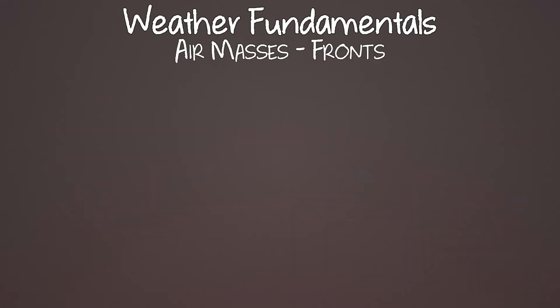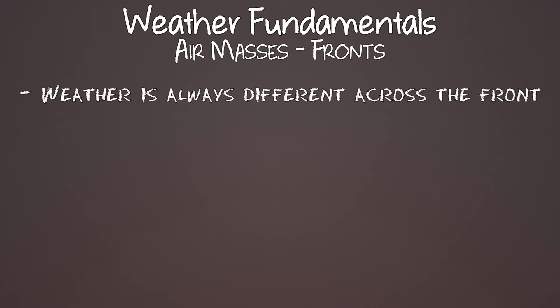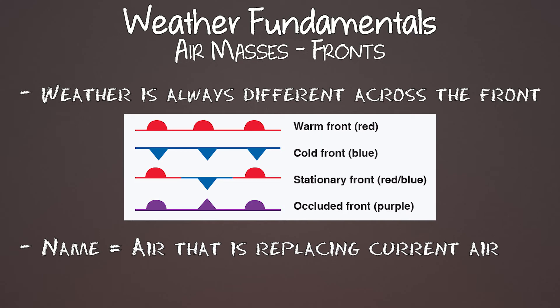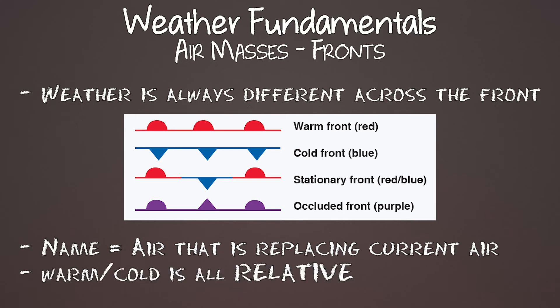When air masses run into other air masses that are different, they form a front — a boundary layer between the two. The weather is always different on the other side of a front because it's a different air mass with different properties. We have warm, cold, stationary, and occluded fronts. The front gets named based on the air that's coming in to replace the air that's currently there. Warm and cold don't refer to absolute temperatures — everything in weather is relative. A warm front can be minus 20 degrees if it's replacing air that's minus 30 degrees.